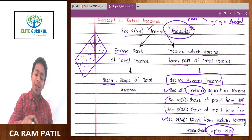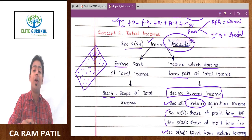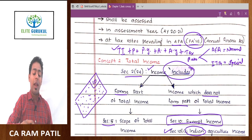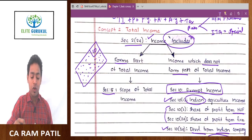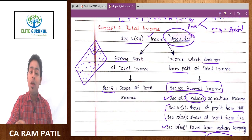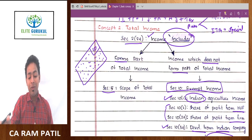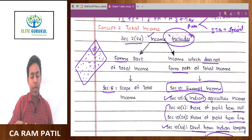Section 10(34) effectively blesses the majority of share market investors. Exceptionally a few very rich individuals — like prominent business families or movie stars with crores invested — will be taxed, but the tax rate there is very low at only 10 percent. We will continue with the definition of income from the study material in another lecture.